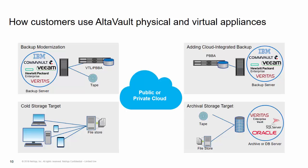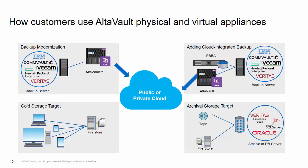First, AltaFault can be used as a backup modernization play for existing or legacy tape infrastructure. By removing your existing tape infrastructure, AltaFault can be used to improve your off-site capability and your DR posture. In addition, AltaFault can be used to augment an existing purpose-built backup appliance solution. Instead of increasing the amount of storage and cost associated with a purpose-built backup appliance, you can use AltaFault to tier off those backups to the cloud and save that purpose-built backup appliance space for your most recent copies.